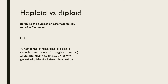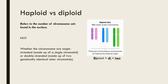Therefore if a cell contained these chromosomes it would be a diploid cell as it contains two copies of each chromosome. A good way to remember it is that the root word 'di' means two and diploid cells contain two copies of each chromosome.